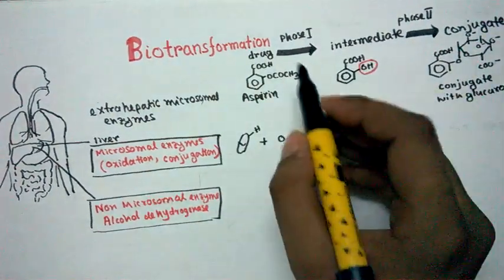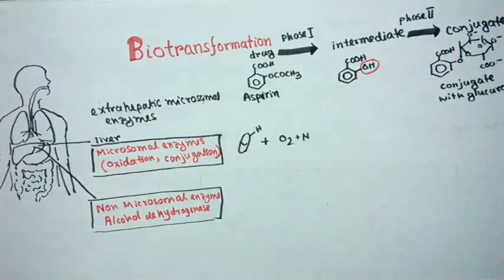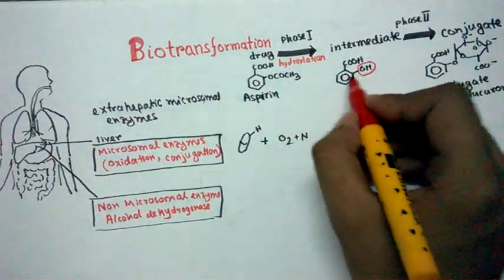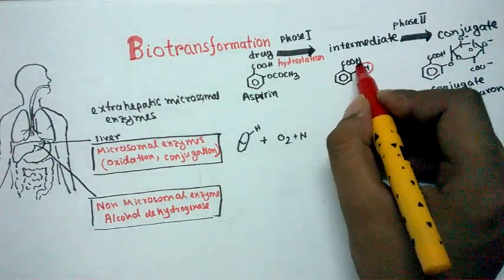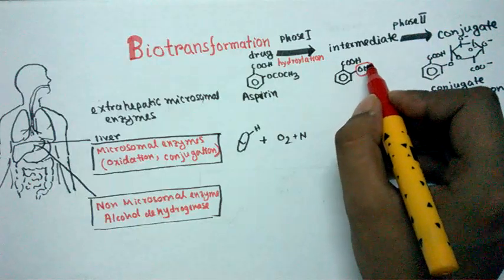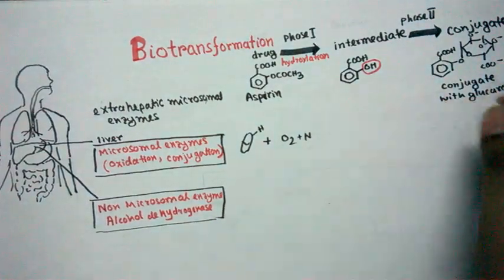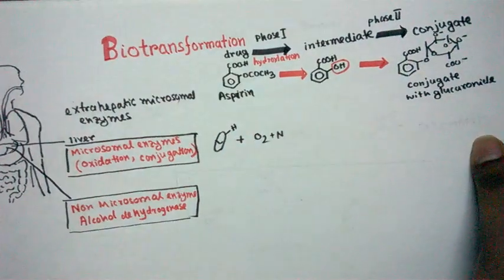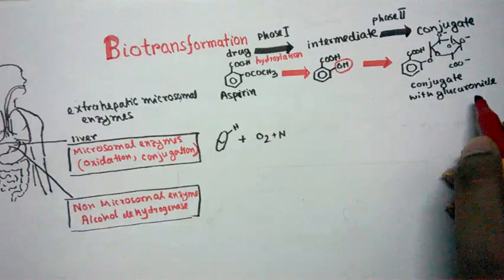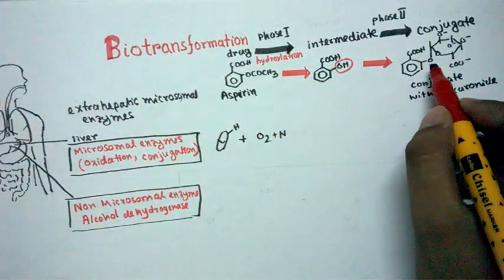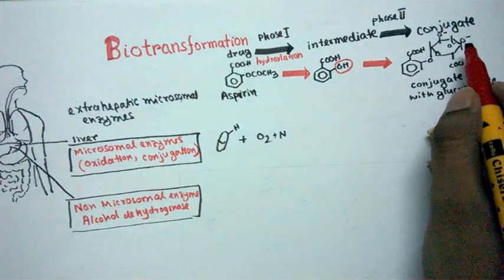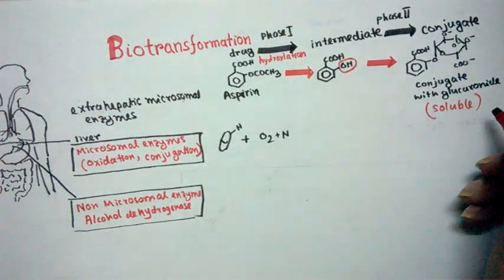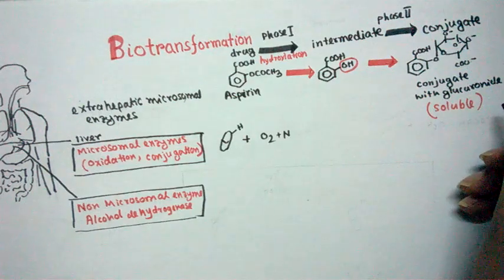In the phase 1 reaction for aspirin, hydroxylation occurs — a hydroxyl group is attached to the aspirin chain, making the intermediate a little more soluble. Then in the phase 2 biotransformation reaction, a conjugation reaction occurs: UDP-glucuronosyltransferase transfers a glucuronide group onto the aspirin side chain. As a result, many polar groups are added, making it highly soluble and easily excreted in the urine.